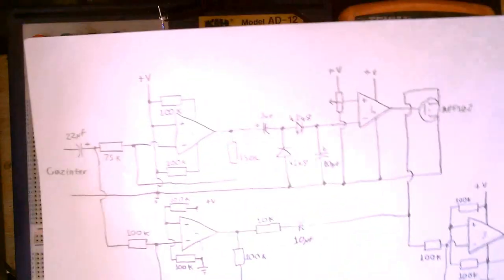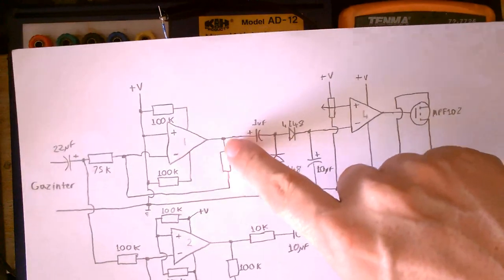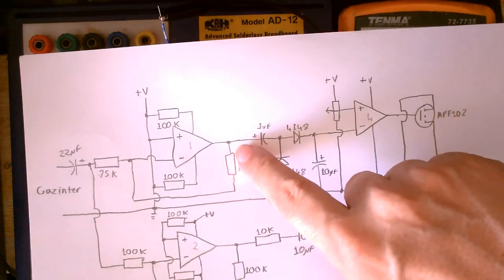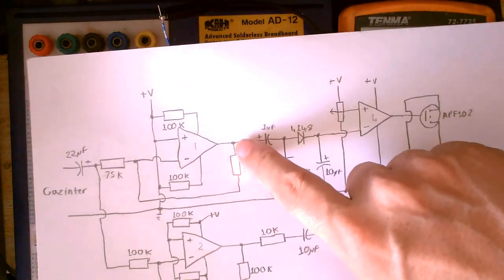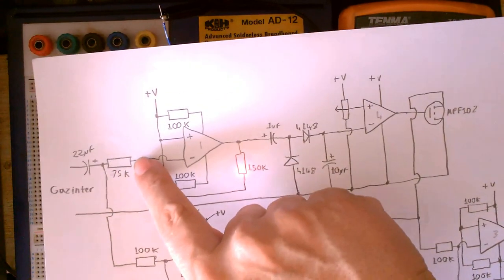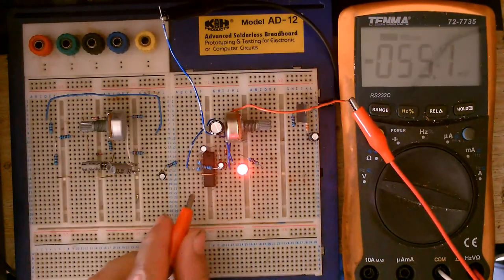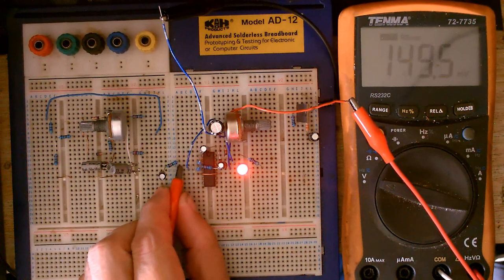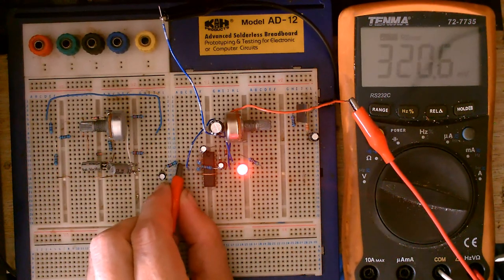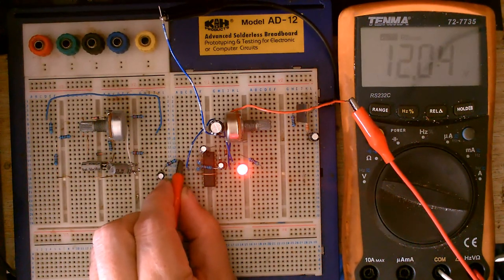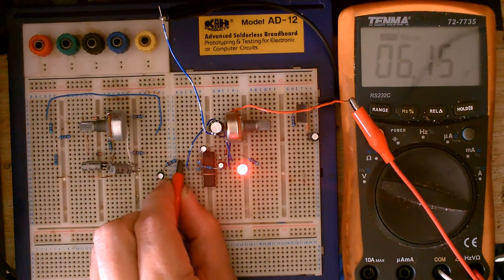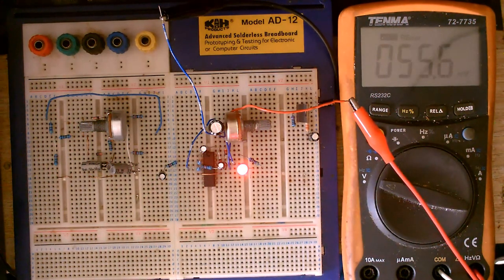OK, so we should have about half of the supply voltage here. I'm powering this on 12 volts, so we should have about 6 volts here, we should have about 6 volts here, and yeah, 6 volts there. So measuring at the audio input, we should have 6 volts, and indeed we do.